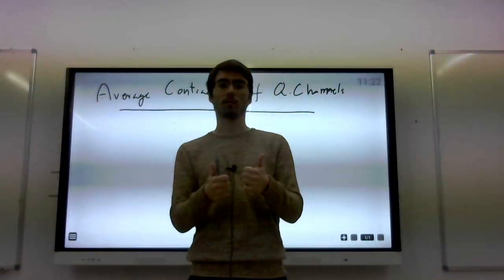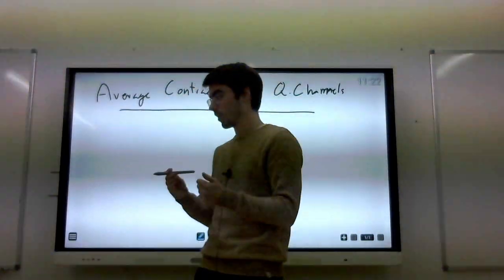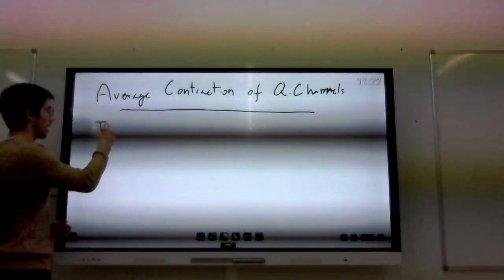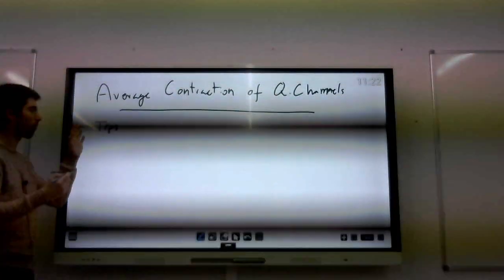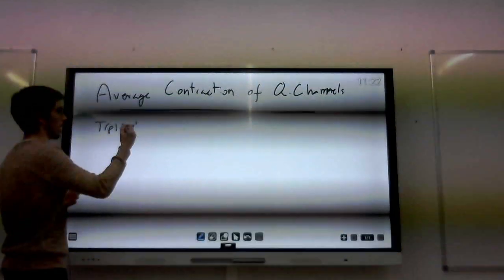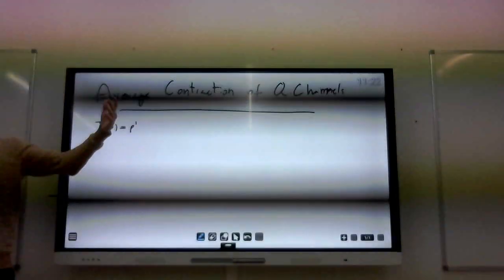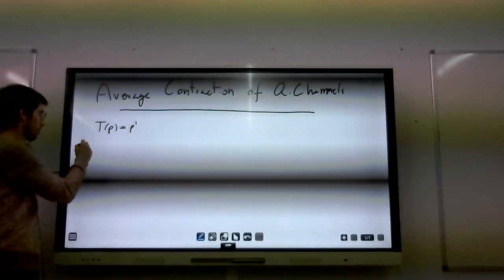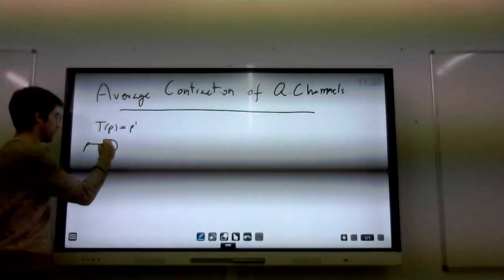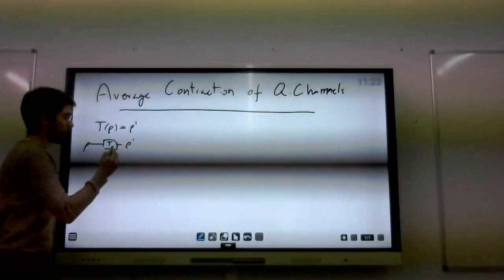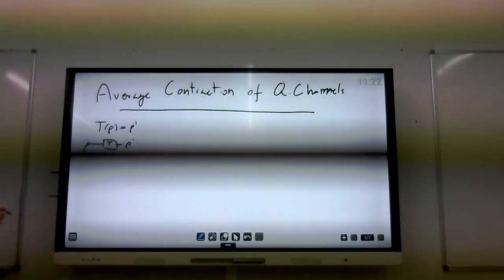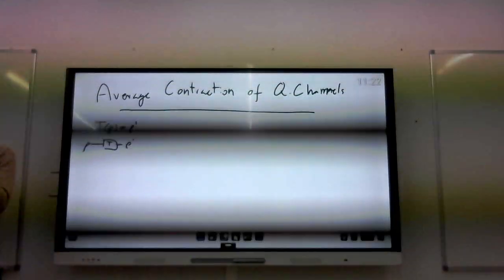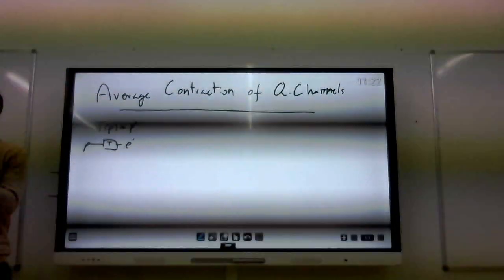Let's start with the basic stuff. A quantum channel is a process that takes a quantum system, a quantum state, and gives you a new quantum state. So this is the input, and here you get some output state. Contraction is about how the channel affects the states in terms of distinguishability between each other.